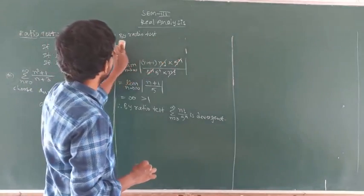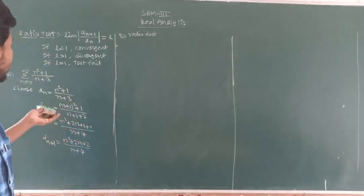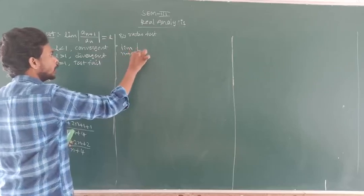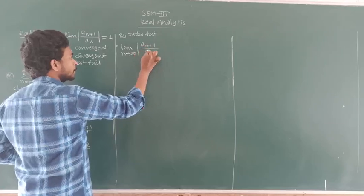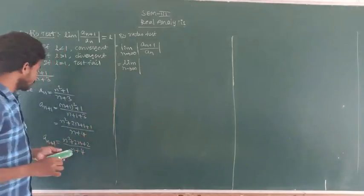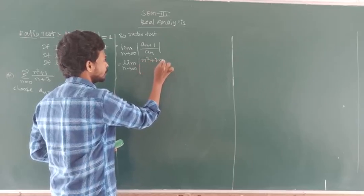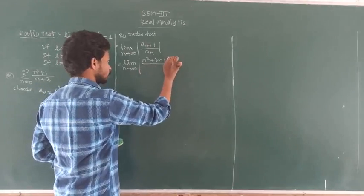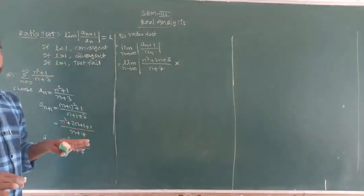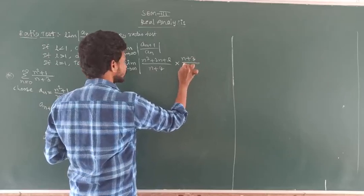By ratio test, we compute the limit as n tends to infinity of a_{n+1} by a_n. a_{n+1} is n squared plus 2n plus 2 divided by n plus 4. Since a_n comes to the other side, it becomes reciprocal: n plus 3 divided by n squared plus 1.